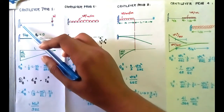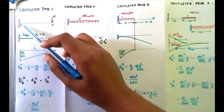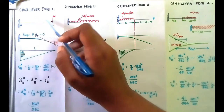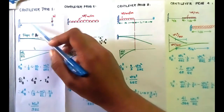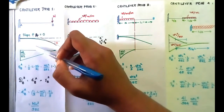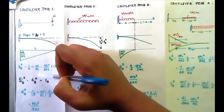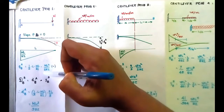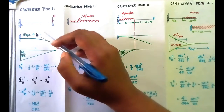Theta of B with respect to A is equal to the area of the bending moment diagram between A and B. That is half into L into WL by EI, which gives WL squared by 2EI.